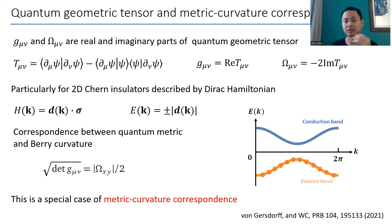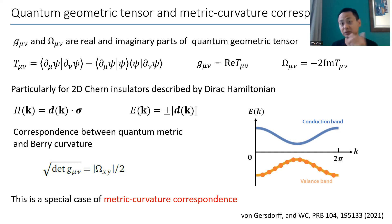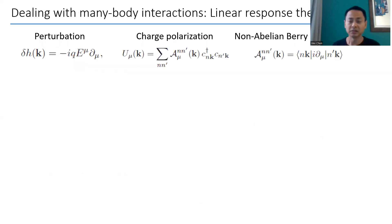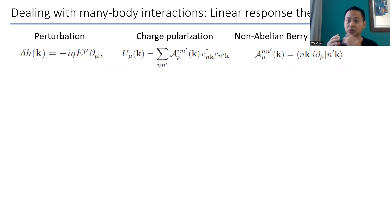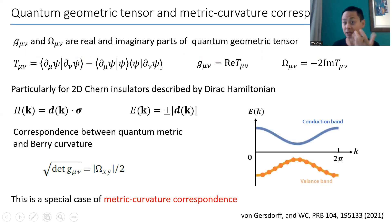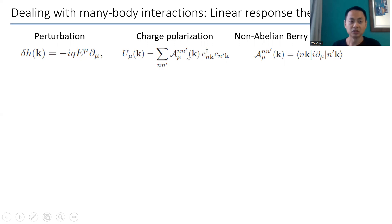These are all results for non-interacting states where you have a well-defined state to begin with, so you can calculate its derivative and all that. But the issue now is what happens in real materials when you have complications such as many-body interactions, disorder, and phonons, which oftentimes will render the state not even a well-defined single-particle state. How do you define the quantum metric and Berry curvature in that case?